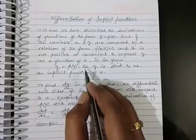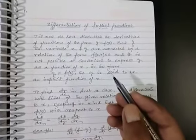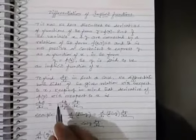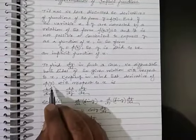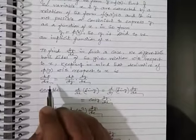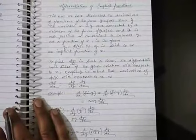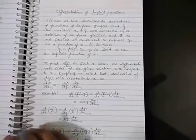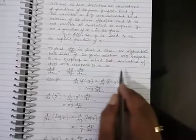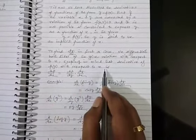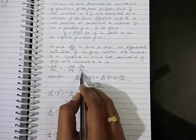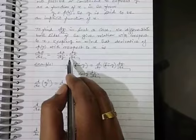So what will be the differentiation and what related problems will be discussed today? To find dy/dx in such a case, we differentiate both sides of the given relation with respect to x, keeping in mind that the derivative of φ(y) with respect to x is dφ/dx = (dφ/dy)·(dy/dx). That is, the chain rule, as you have done before.